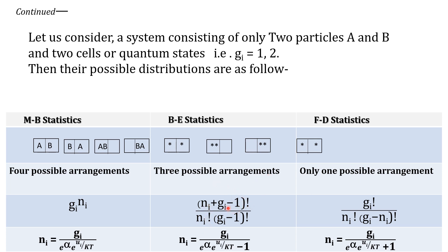For Fermi-Dirac statistic, the general formula is G_i! divided by N_i! into (G_i − N_i)!. Using the same example, the number of quantum states G_i is 2, so we have 2! divided by 2! times (2 − 2)!, which is 2! divided by 2! times 0!. Since 0! equals 1 and the 2! factorials cancel, we get only one possible arrangement.